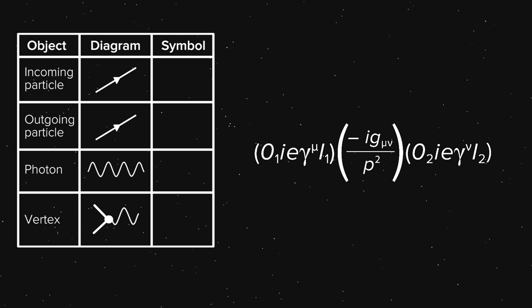For instance, the incoming electron corresponds to the letter I, while the outgoing electron corresponds to the letter O. The photon corresponds to a fraction, specifically minus I g sub mu nu over p squared. The I is the square root of negative one, while the g sub mu nu is used to handle adding up all the relevant subatomic spin for the photon. The p is just the energy carried by the photon. A vertex has its own corresponding mathematical term, which is an I e gamma, where the superscript mu or nu doesn't mean a power like squared or cubed. Instead, it has some implied information on how to add everything up, and is related to the subscripts in the g from the photon.